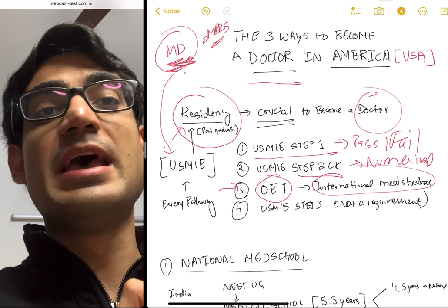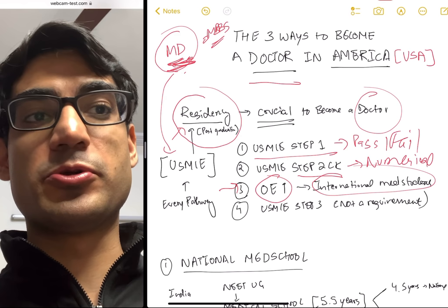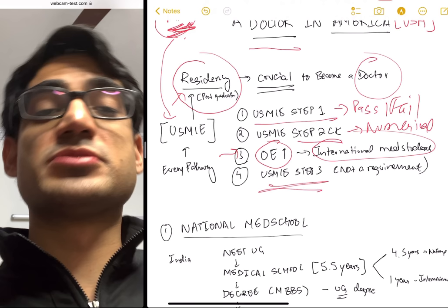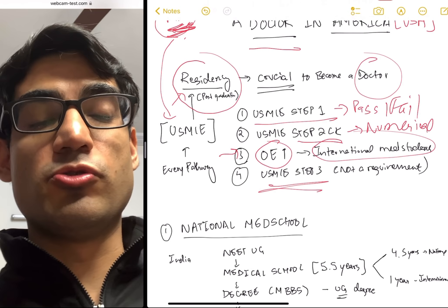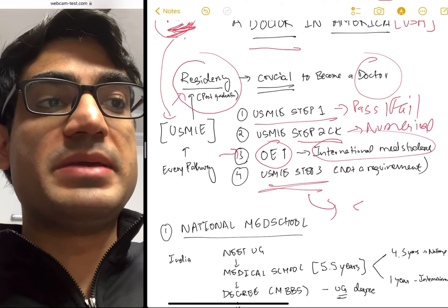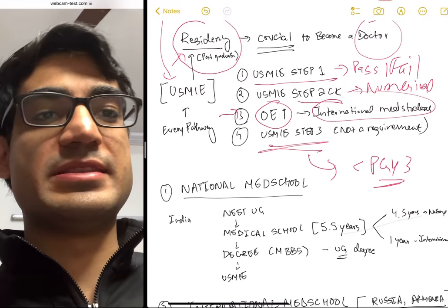OET is especially for international medical students. People who got their medical degree from the US don't have to write OET because they will already be proficient in that. At the end there's Step 3, which is optional. A lot of medical students end up writing Step 3 before matching into a residency in the US, but it's not a requirement — you can write it during PGY2, as many residency programs allow that.